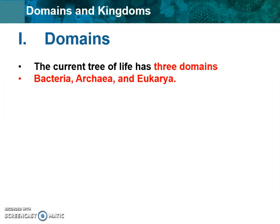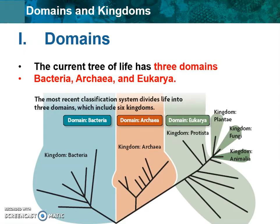First let's talk about domains, which is the largest category of classification we have. There are currently three major domains that we as scientists have decided exist. They are as follows: bacteria, archaea, and eukarya. When we think about these different categories, we're really talking about how we are branching out all living things into those three categories, and there are major characteristics of the things in each of those three different domains.